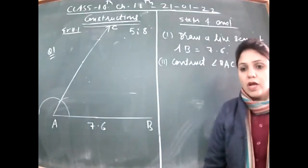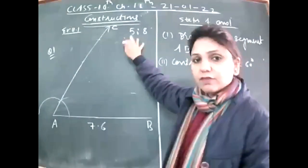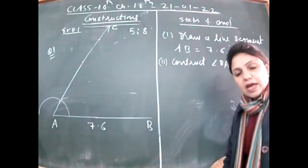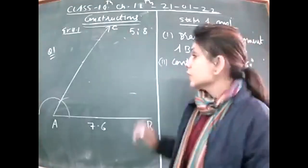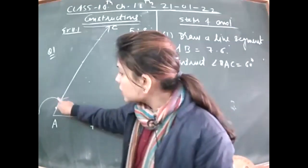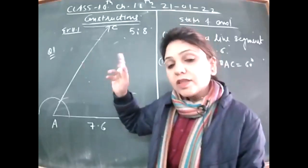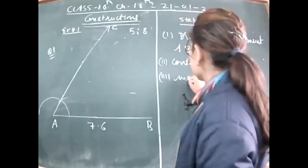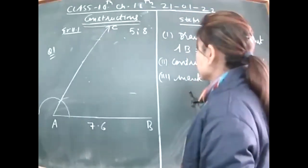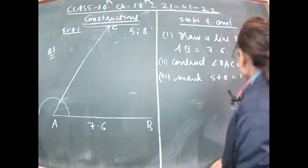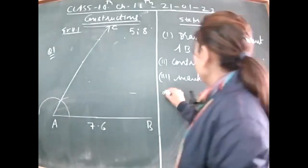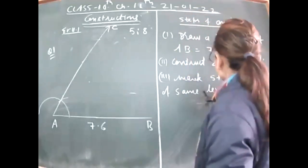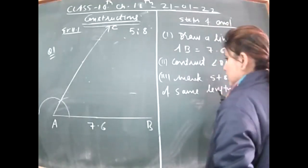Step 3: Add the two parts of the ratio — 5 + 8 = 13. Mark 13 arcs of equal length along AC starting from A, so that A₁ = A₂ = ... = A₁₃ (all equal). Mark these 13 equal arcs along AC.